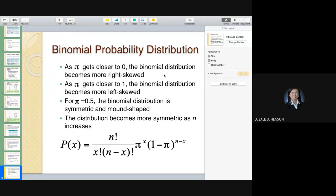As pi gets closer to 0, the binomial distribution becomes more right skewed. As pi gets closer to 1, the binomial distribution becomes more left skewed. But as pi equals or gets closer to 0.5, as it approaches this value, the binomial distribution becomes normally distributed or bell-shaped.